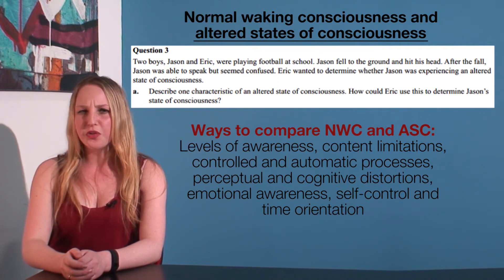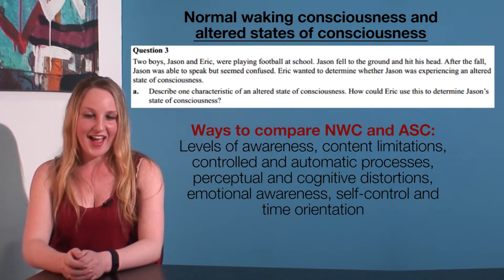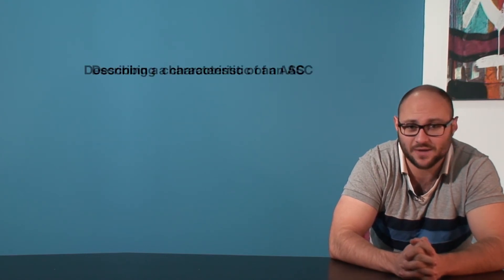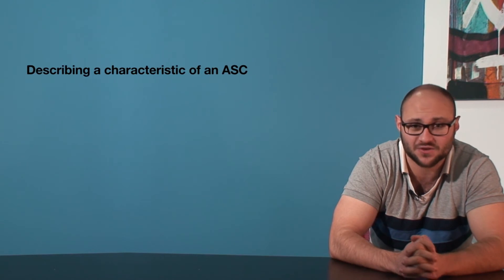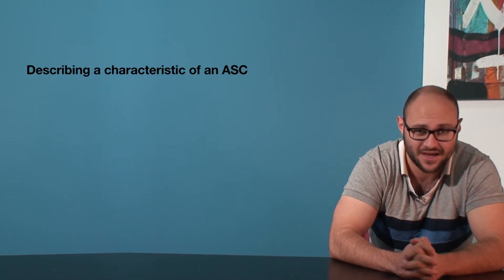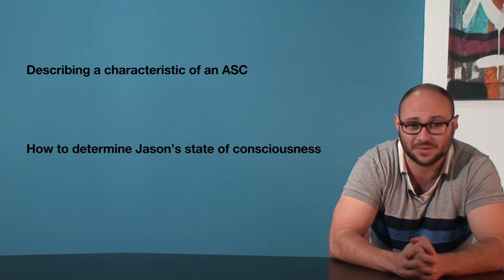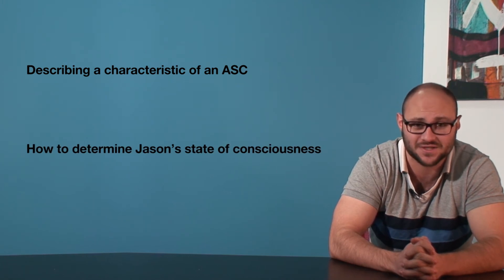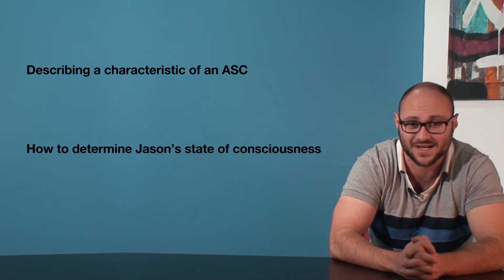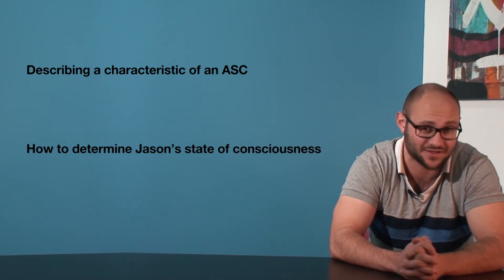What do you think the mark allocation would be here, Angus? As there are two marks and two parts to the question, we can reasonably assume that one mark will be for describing a characteristic of an altered state of consciousness, and that the other mark will be for explaining how Eric could use the characteristic to determine Jason's state of consciousness.